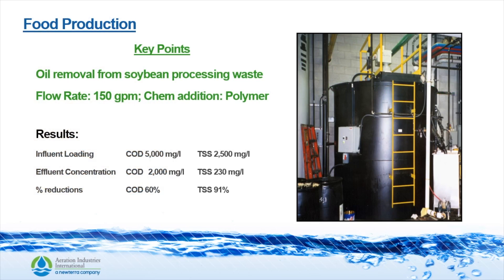Here is another example where we were removing oil from a soybean processing plant. The flow rate was 50 gallons per minute and they were adding polymer 280 for coagulation. The influent COD was 5,000 mg/L and the TSS was 2,500 mg/L. The effluent concentrations were 2,000 mg/L for COD and 230 mg/L for TSS.